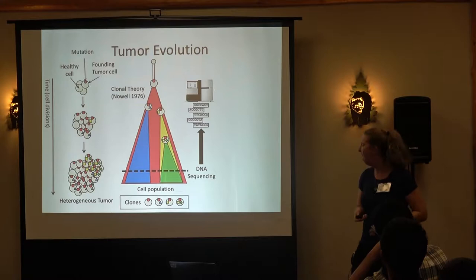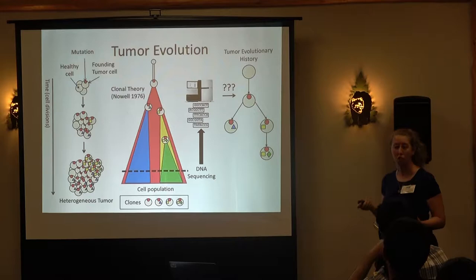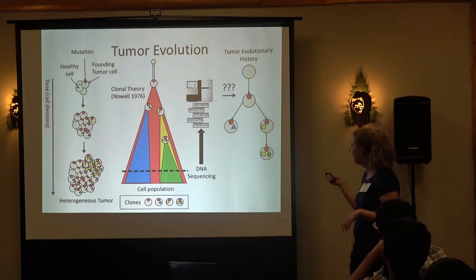As a computer scientist, I want to find a more concrete way to represent this. I think about representing this as a particular type of rooted tree where vertices represent different clones or populations of cells that existed at some point during the evolution of the tumor, and edges are telling me direct ancestral relationships between those.